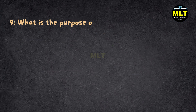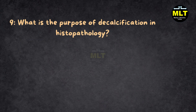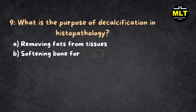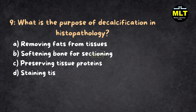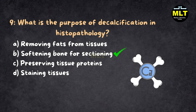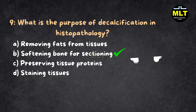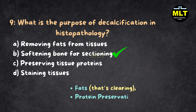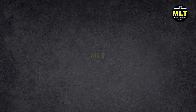Question 9: What is the purpose of decalcification in histopathology? Options: A. Removing fats from tissues, B. Softening bone for sectioning, C. Preserving tissue proteins, D. Staining tissues. Correct Answer: B. Softening bone for sectioning. Explanation: Decalcification removes calcium salts, making bones soft enough to section. It's not about fats — that's clearing — nor protein preservation — that's fixation — or staining. It's all about preparing bones for the blade.